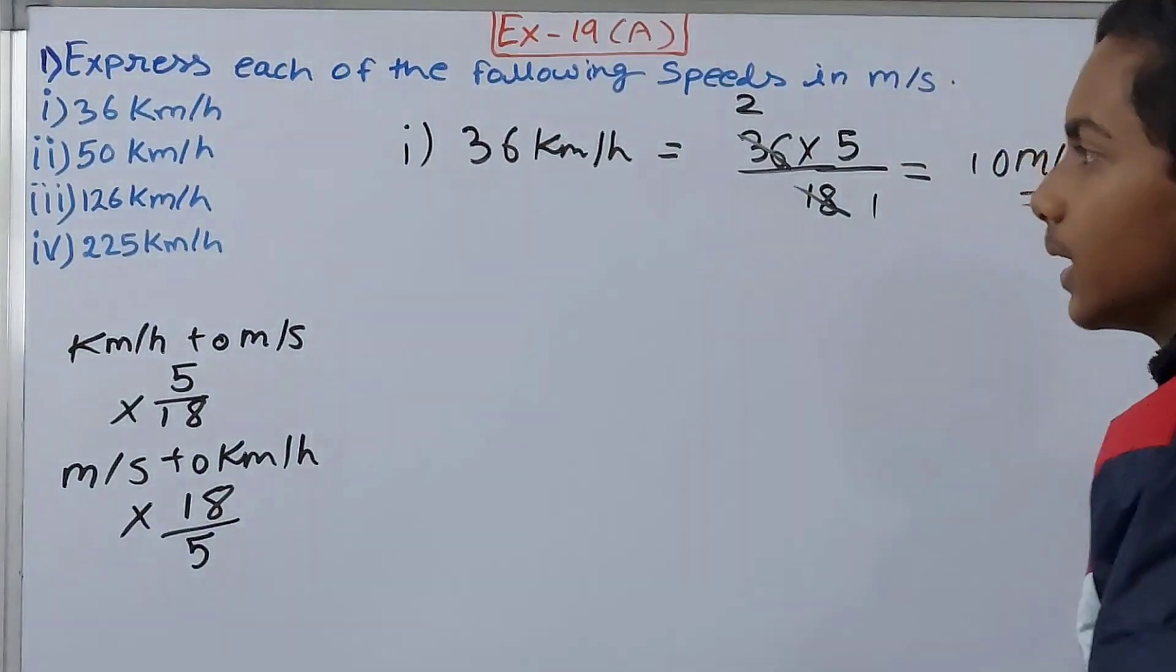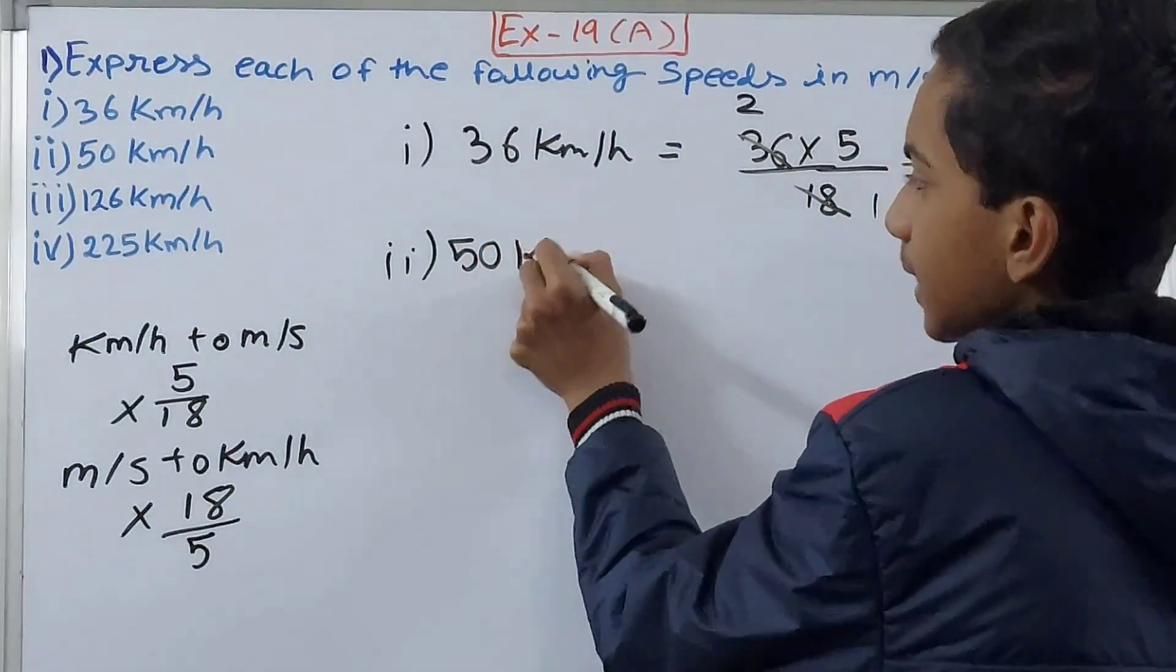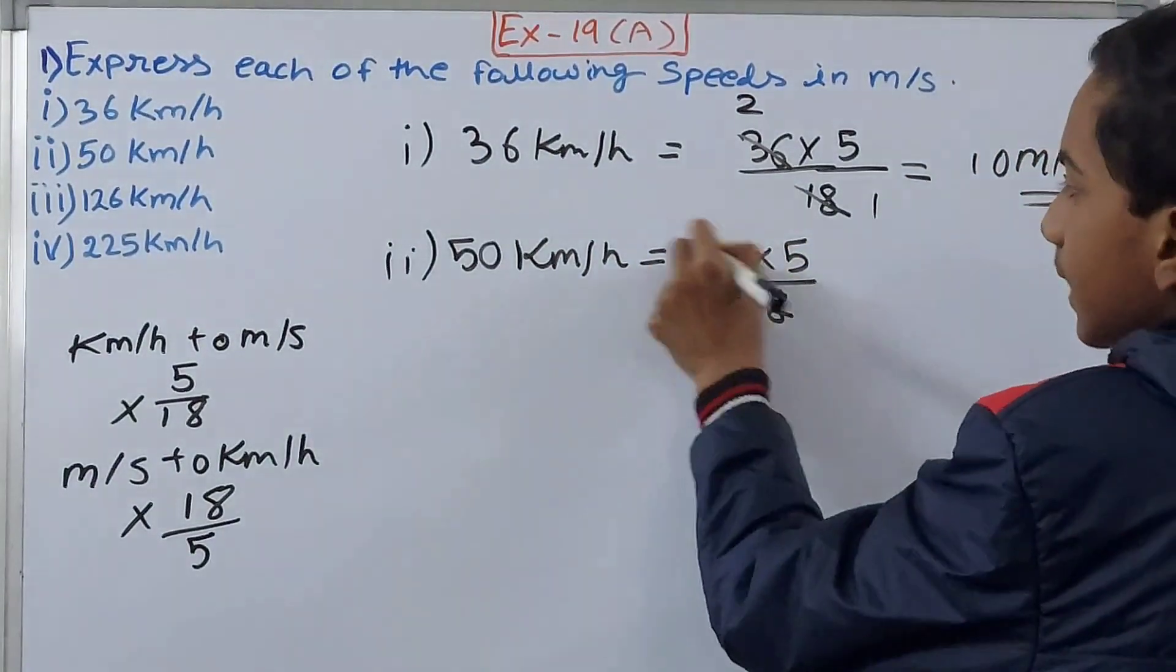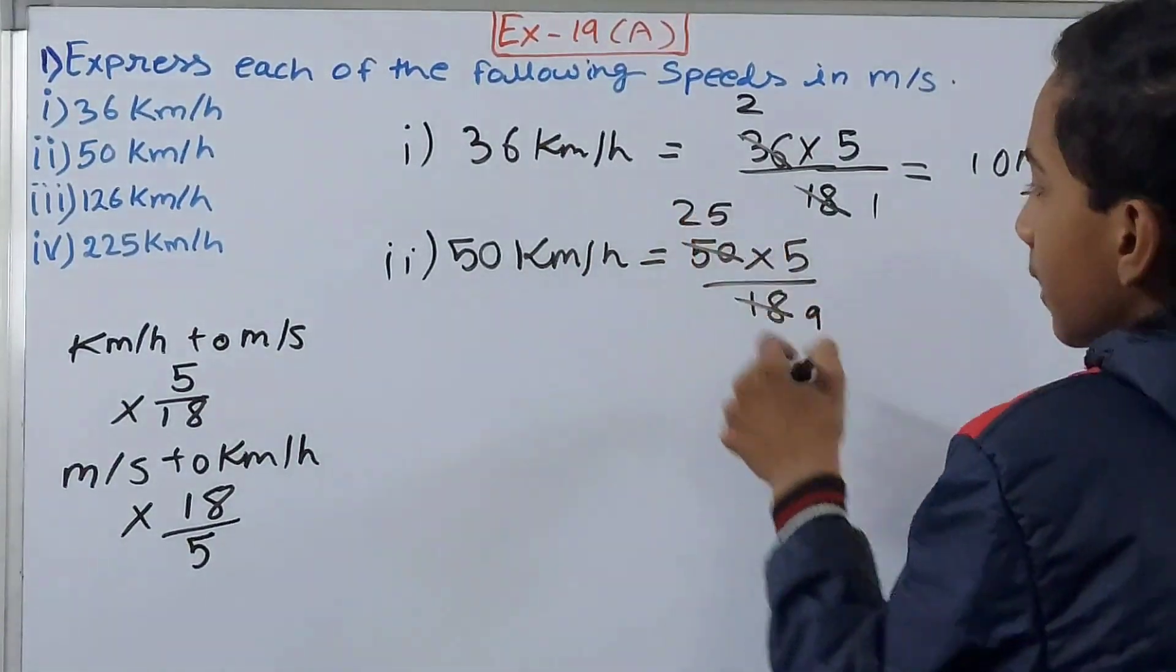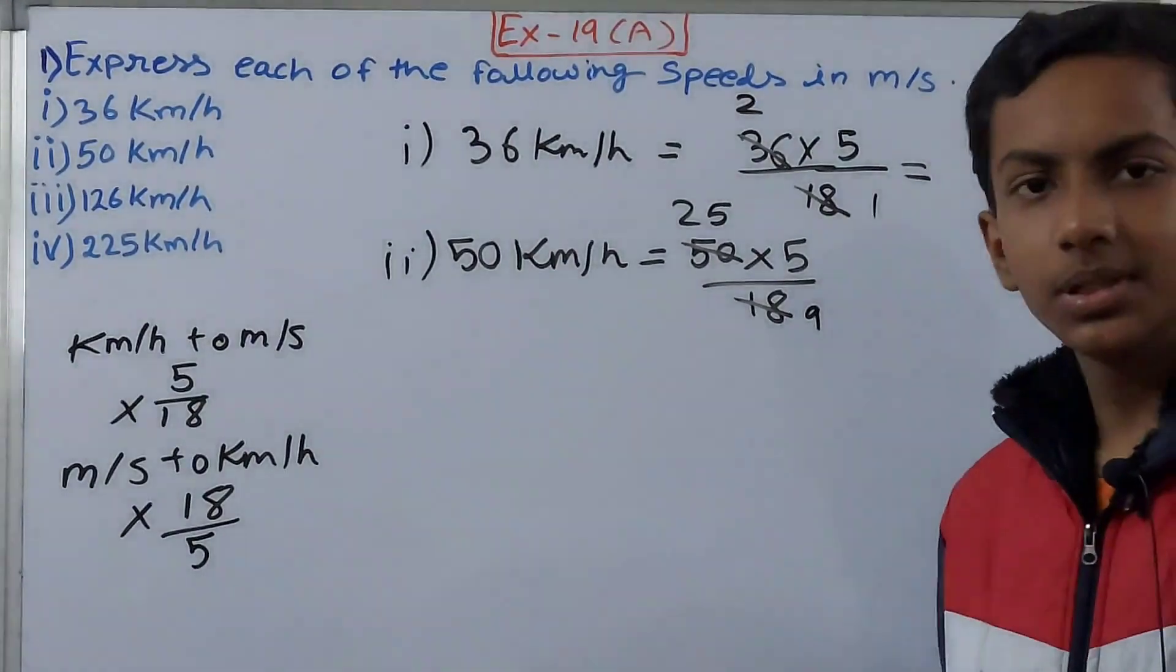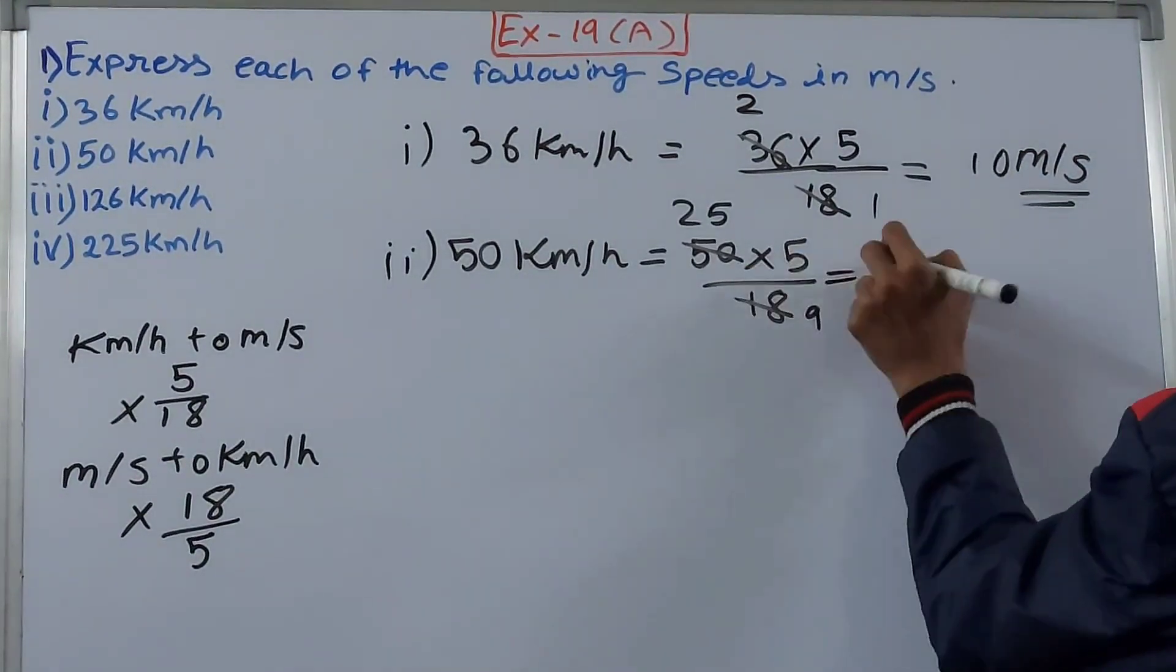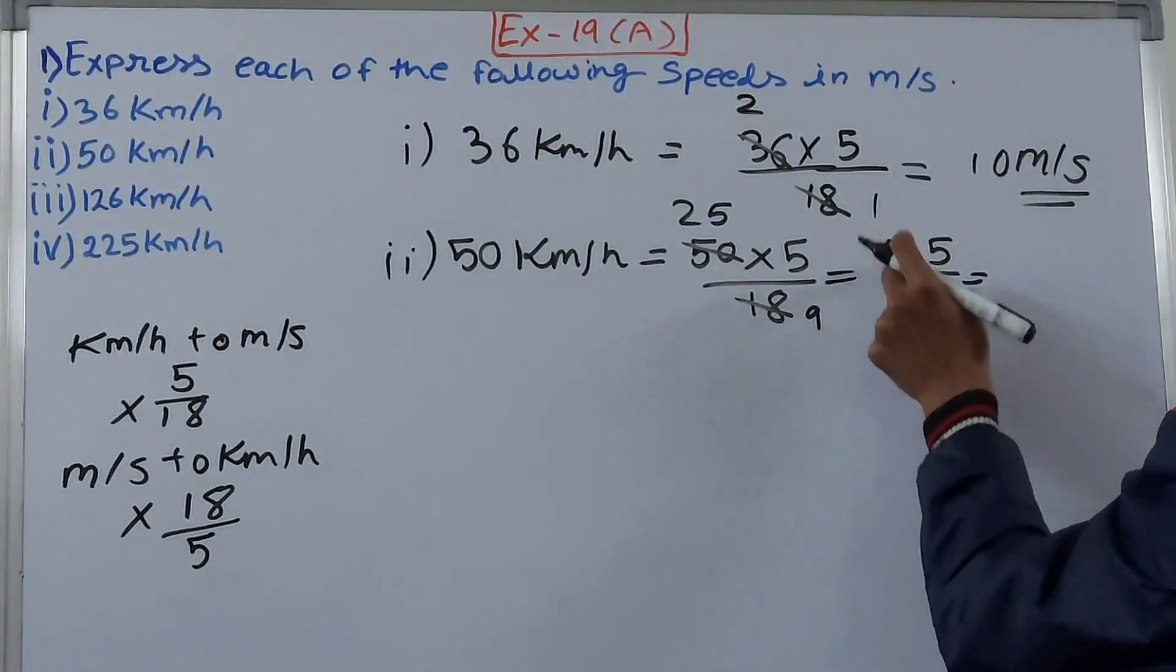Second we've got 50 kilometers per hour. Again same thing, 50 into 5 upon 18. Cancel this, 9 and this becomes 25. So the answer might come in decimals, don't worry about that, just calculate.